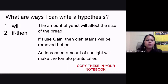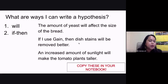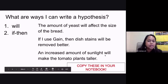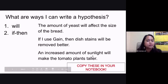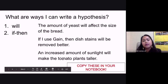You can also say, 'If I use Gain, then dish stains will be removed better' — that's the if-then format — or 'Gain will remove dish stains better' — that's the will format. For the third example: 'An increased amount of sunlight will make the tomato plants taller' is in the will format, or 'If I increase the amount of sunlight, then the tomato plants will grow taller' is in the if-then format.